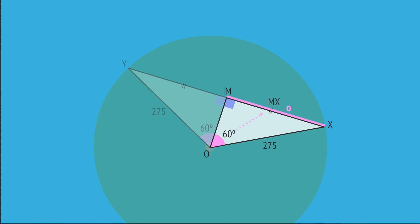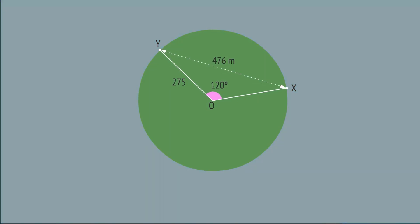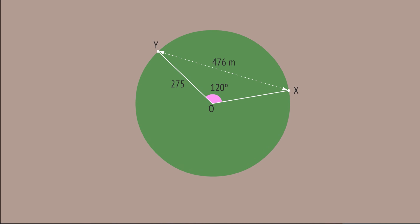We're interested in the opposite and the hypotenuse, so we substitute into the sine ratio, rearrange, and use a calculator to give MX equals 238 metres. And since M is the midpoint, the length XY is 2 times 238, or 476 metres, giving us the required distance between X and Y.